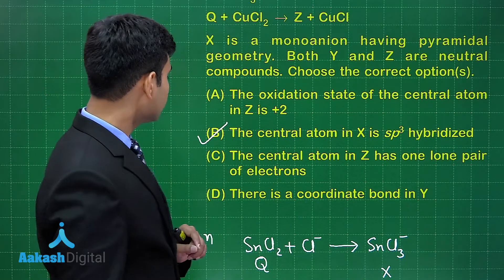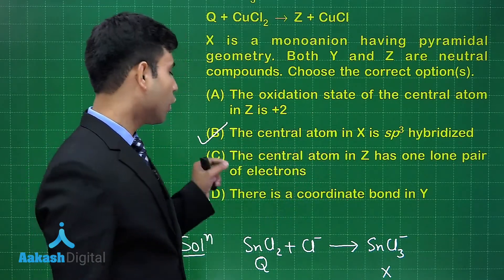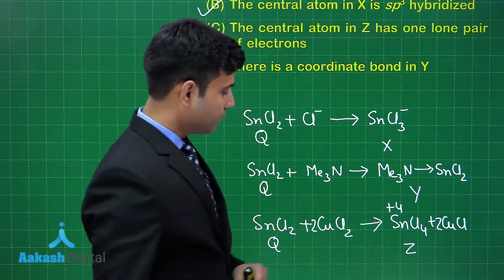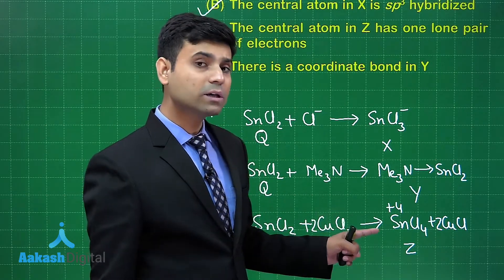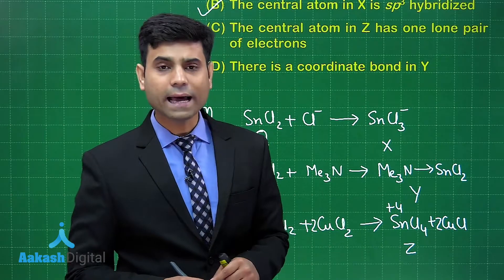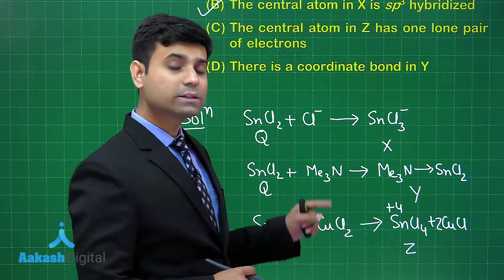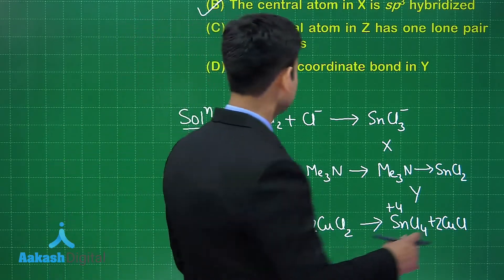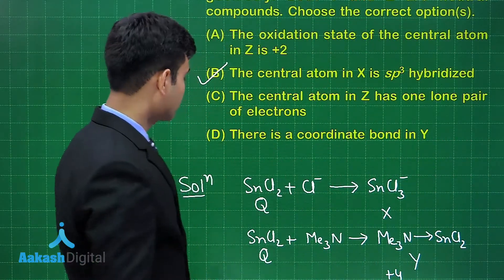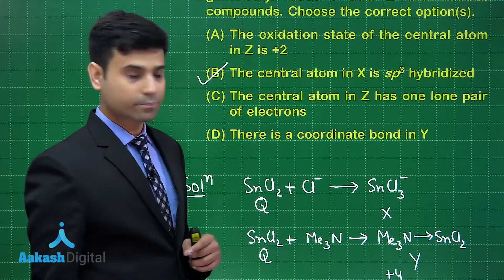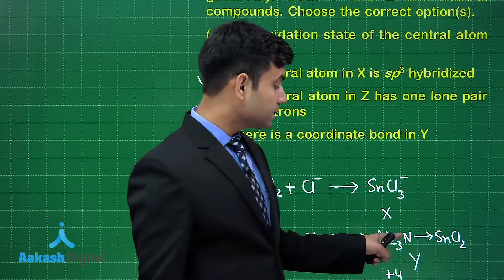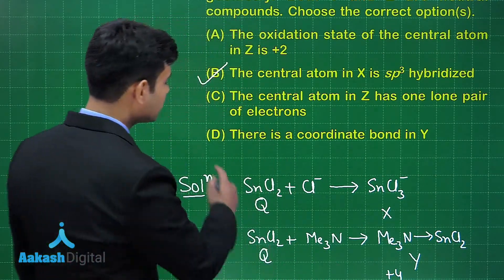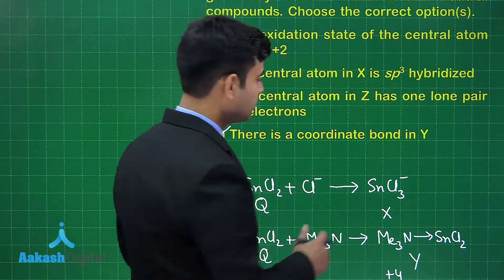Option C says the central atom in Z has one lone pair of electrons. Z is SnCl₄ with sp³ hybridization — it has no lone pairs and tetrahedral geometry. So option C is incorrect. Option D says there is a coordinate bond in Y — in Y (Me₃N→SnCl₂), there is a coordinate bond from trimethylamine to SnCl₂. So this statement is correct. Hence the correct answers are options B and D.